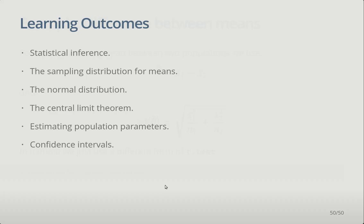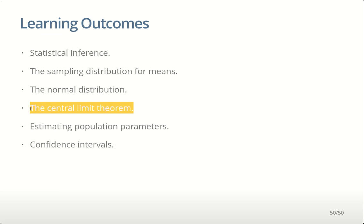What have we covered today? We've covered the concept of statistical inference — the process of working backwards from a sample to the population. We covered how we do that by understanding sample-to-sample variation through the sampling distribution for means or proportions, which follows a normal distribution. The central limit theorem is the mathematics that underlies this process. And we looked at confidence intervals, which take advantage of that process: we understand the amount of uncertainty from sample-to-sample variation, use that as our level of uncertainty, and that will capture the truth 95% of the time.